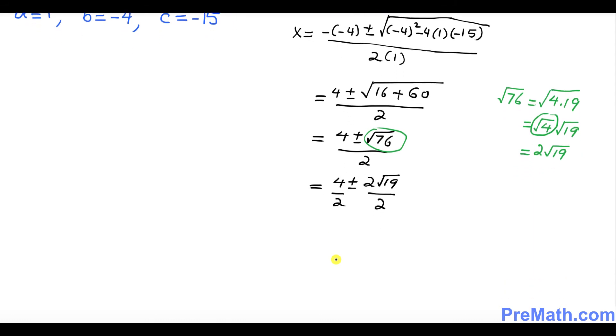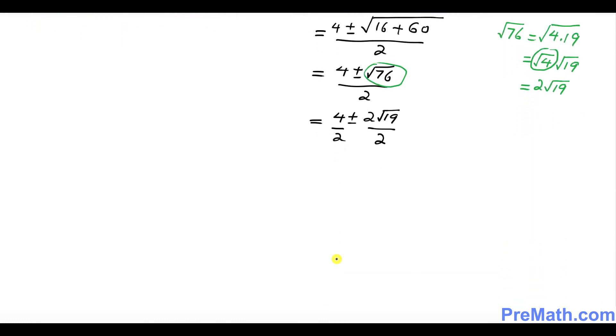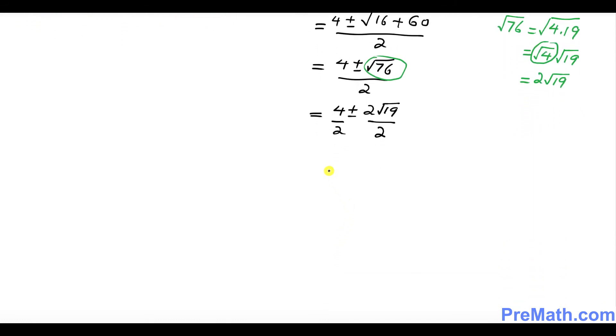So the next step is going to be over here, so x is going to be, so this could be simplified, 2 plus minus, and 2 and 2 are gone, square root of 19.